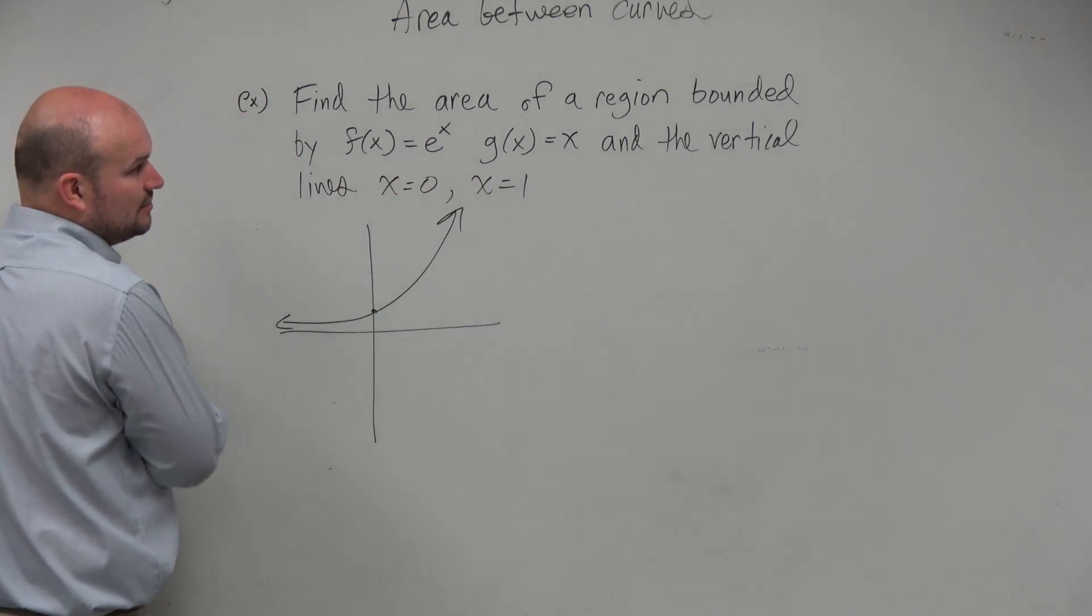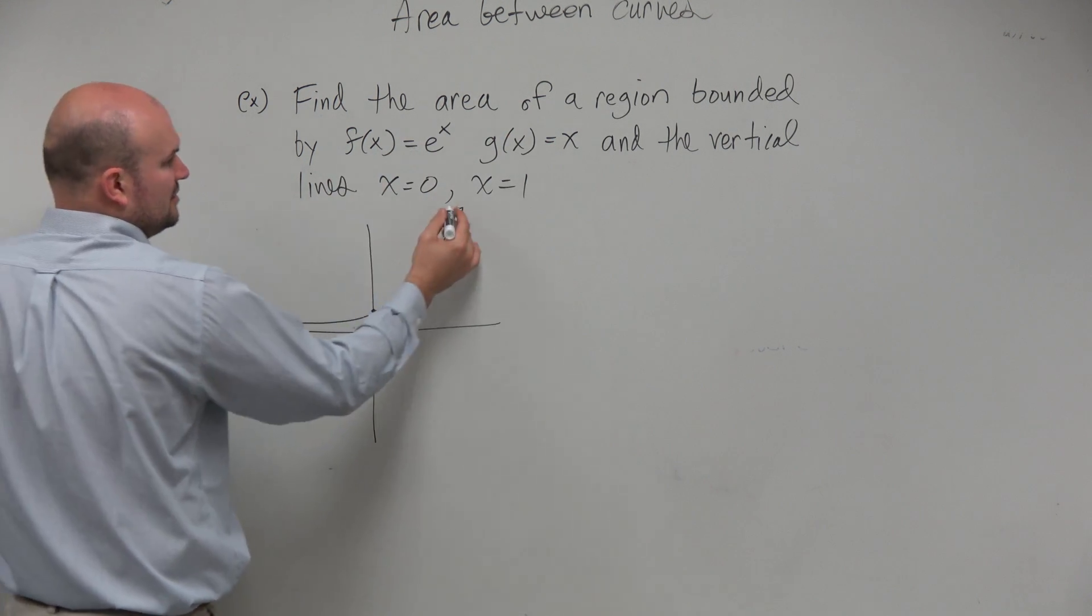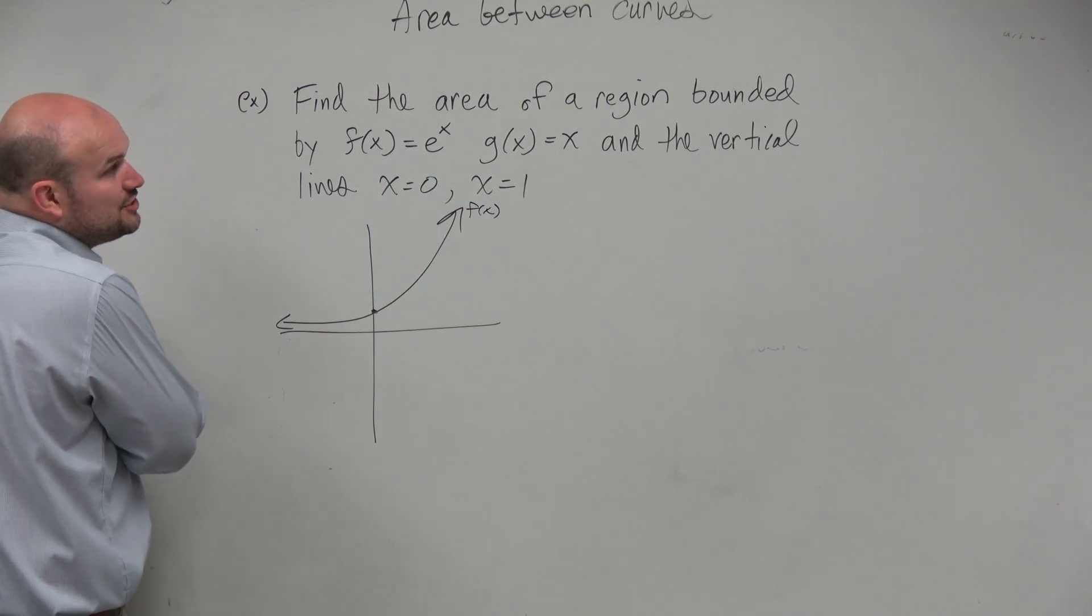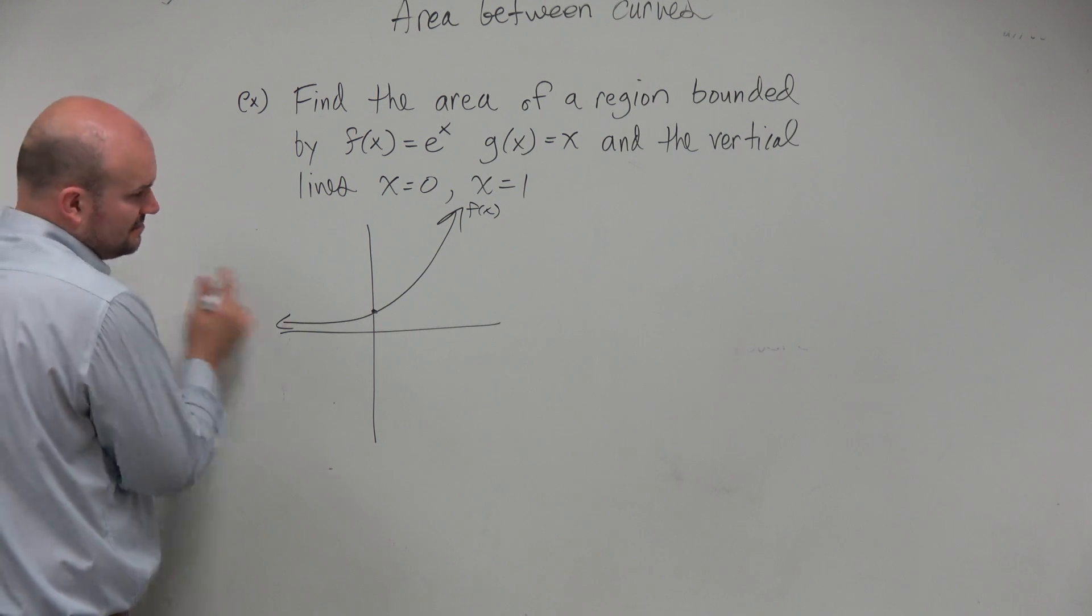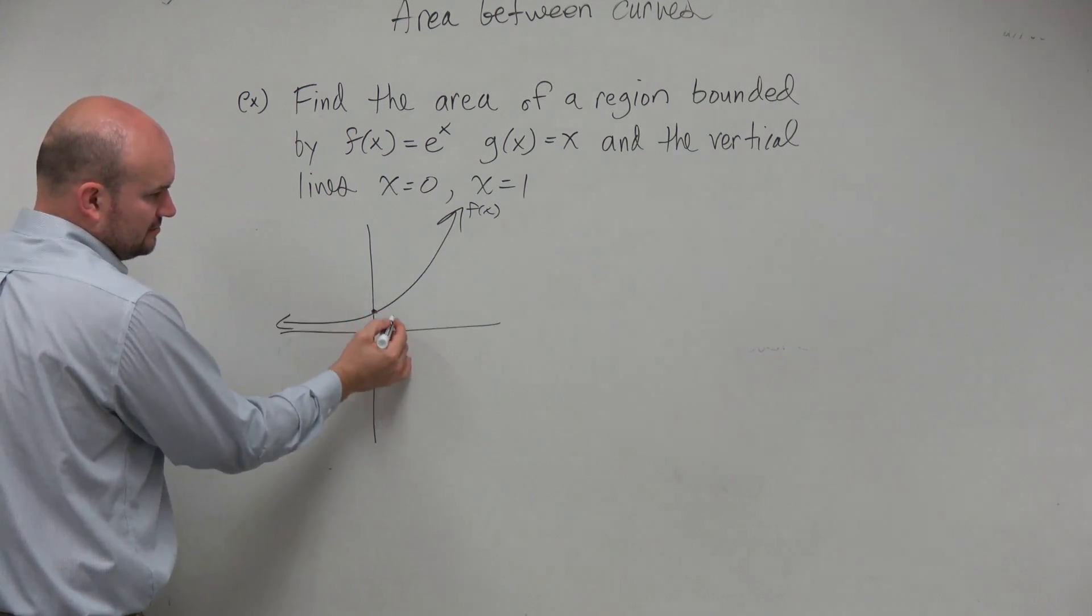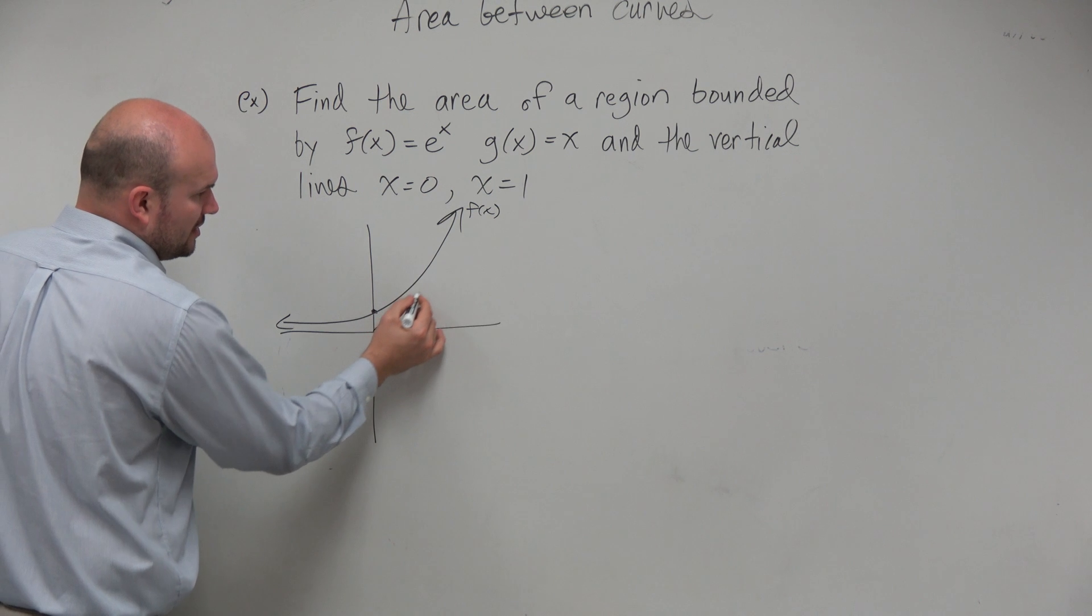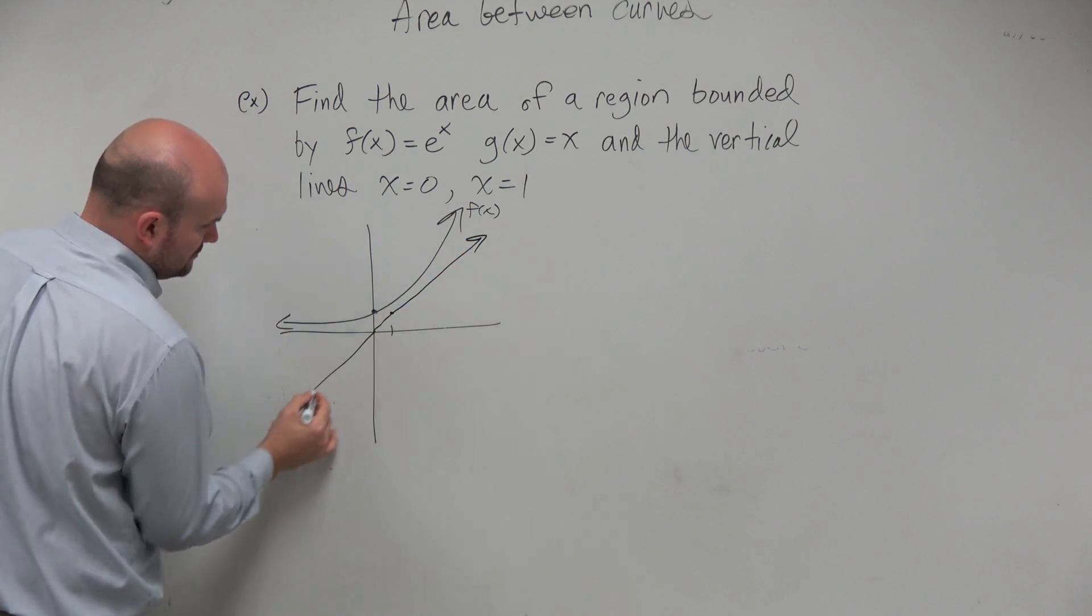And then x equals—I'm sorry, g of x. Let's call this f of x. And then g of x equals x. So that's just like up 1 over 1, right? And then that's what we call our identity function.